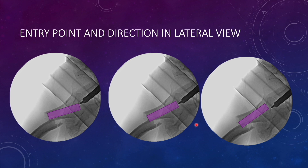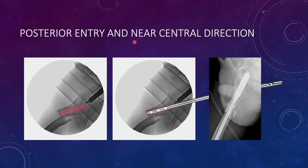That covers the entry point in the AP view. What about the lateral view? There can be a posterior entry directed towards the canal, a central entry directed towards the canal, or an anterior entry directed towards the posterior cortex. It is very difficult to start anteriorly and go directly towards the canal because the proximal femur bows anteriorly — a straight trajectory from an anterior entry point will automatically go posteriorly. Starting with a posterior entry directed towards the middle of the canal, the nail will beautifully guide towards the central part of the canal due to the anterior bow of the proximal femur. You will get a good reduction in the lateral view when your entry point is posterior.